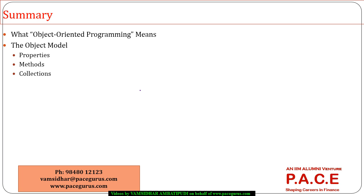That is the brief overview of object-oriented programming that should get you started with the VBA programming aspect. You now know what are the properties of the objects, what are the methods, and what are the collections. We will start using them as part of our coding process. Thanks a lot for listening to this session.